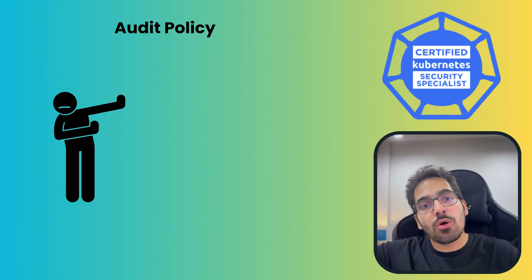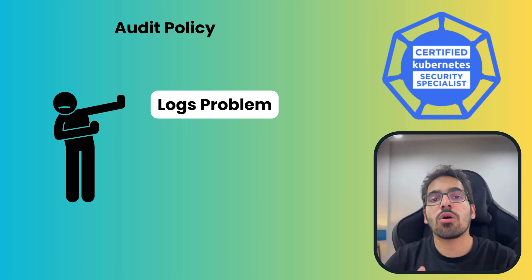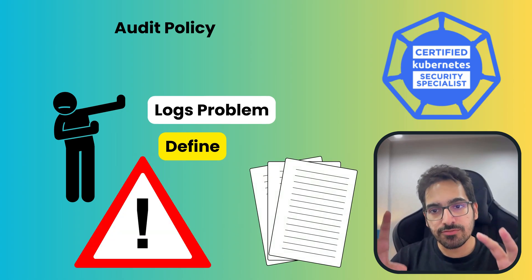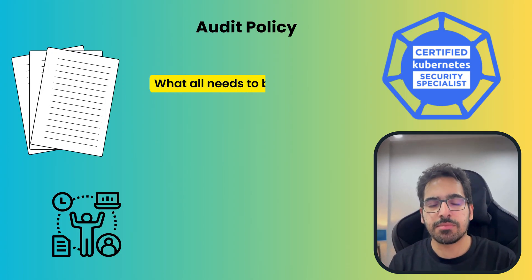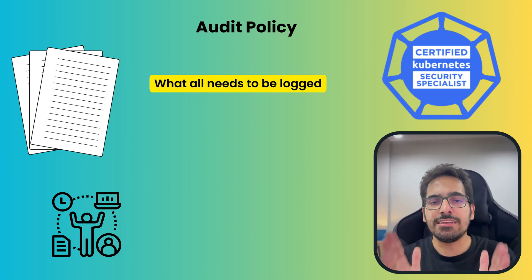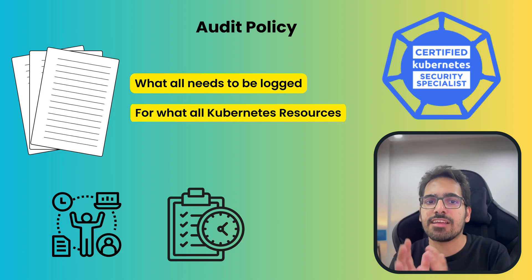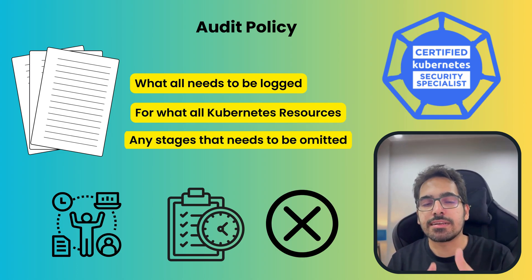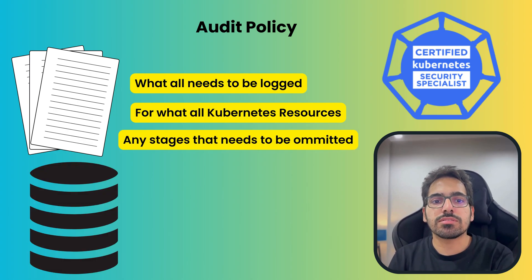The fourth level is RequestResponse — metadata, request body, and response body as well. This log level will definitely add more weight to the logs generated. To avoid too many logs, you need to carefully define in your audit policy what has to be logged for which resources at which levels, and which stages need to be omitted.